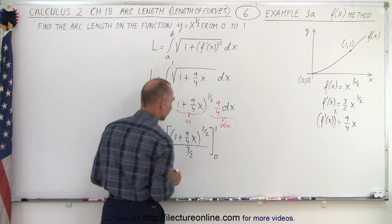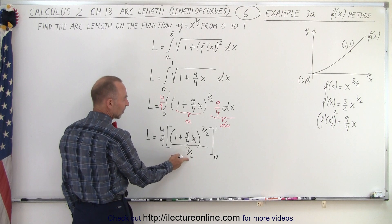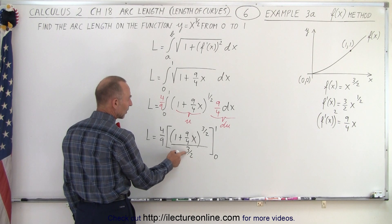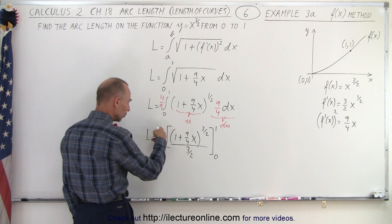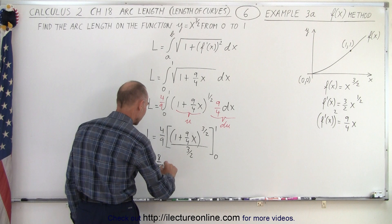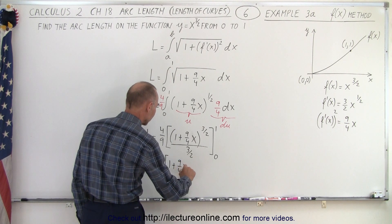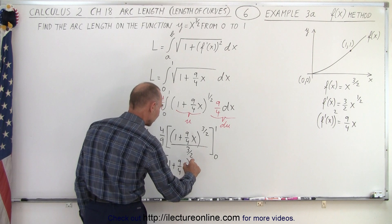What I'm going to do here is when you divide by a fraction same as multiplying by its inverse, so three halves that becomes two thirds. Two thirds times four ninths we have L is equal to eight over 27 times one plus nine over four x to the three halves power and evaluated from zero to one.